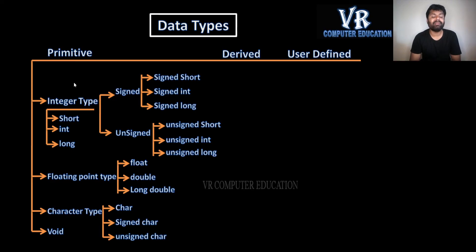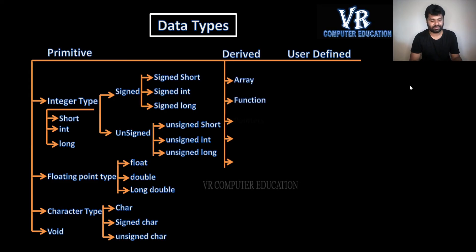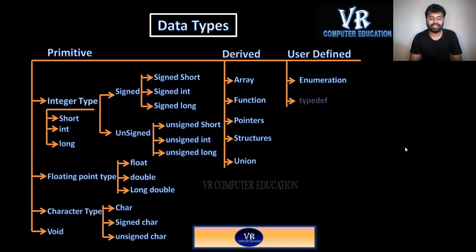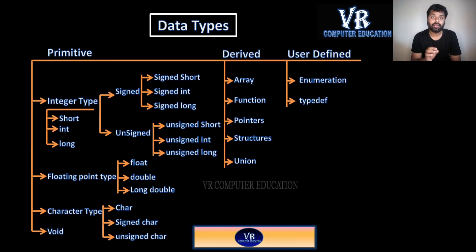Next, derived data types: arrays, pointers, structures, and unions. Today what we have discussed — user-defined data types — there are two types: enumeration and typedef. So these are all the data types of C language or C programming.